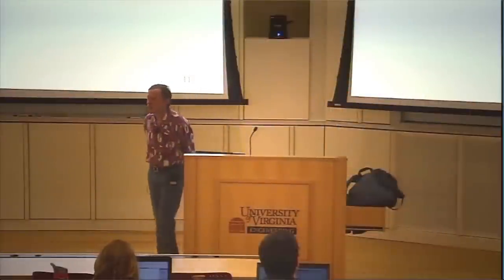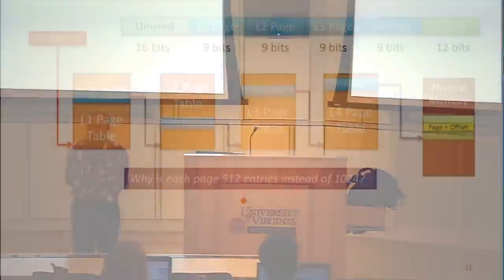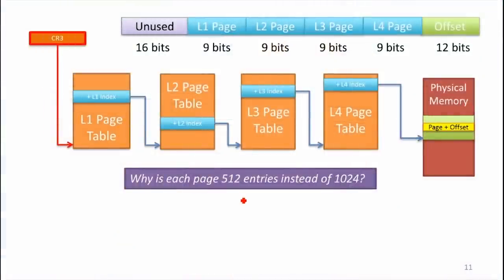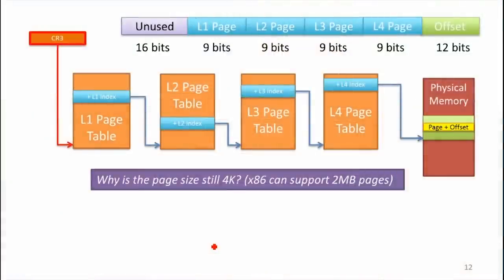Why is each page 512 entries instead of 1,024? This seems a bit of an odd decision, especially because there's 16 unused bits. I have no idea. If anyone can figure it out, you should let me know. It seems like they should be 10 bits. Probably a good reason why they're 9, but I couldn't figure out what it is. These questions I think you should be able to answer. Why is the standard page size still 4 kilobytes rather than bigger? And there are ways to get bigger pages on x86.